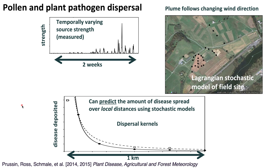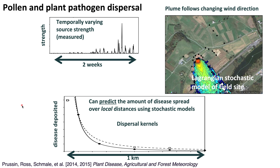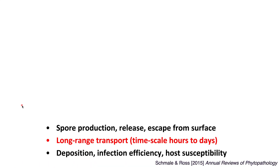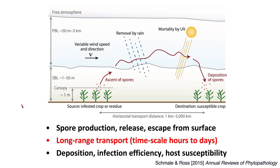This is showing a dispersal kernel — the amount of disease deposited as a function of distance, going out to about a kilometer. That's just locally what happens, within about a kilometer. What happens on larger scales?